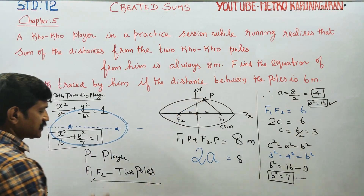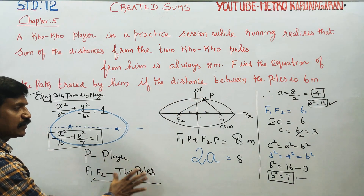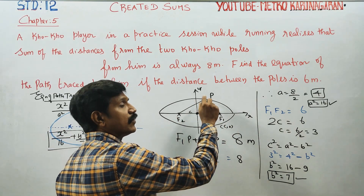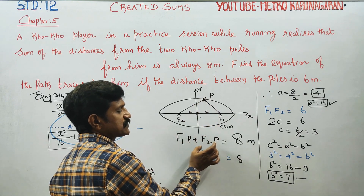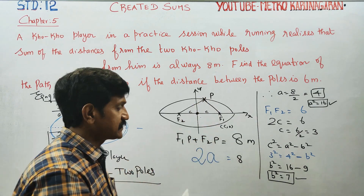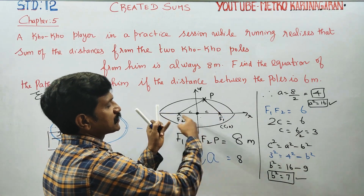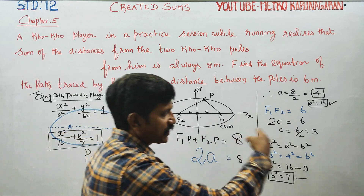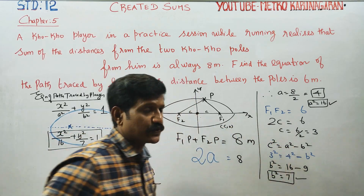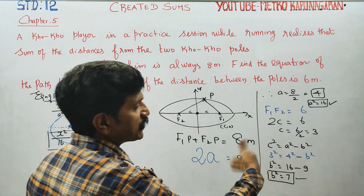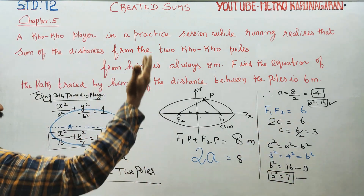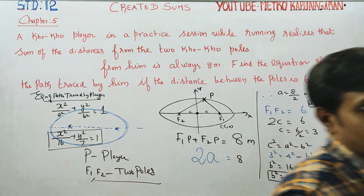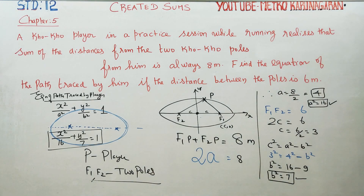You start with the diagram. Just write two nodes: P is the player, F1 and F2 are the two poles correspondingly. Sum of the focal distances from any point on the ellipse to the focus — F1P plus F2P equals 2A, the major axis. C square equals A square minus B square; ellipse is minus, hyperbola is plus. A square is already ready, B square is already ready. Substitute into the equation of ellipse formula to get the path traced by the cocoa player. Okay, thank you.